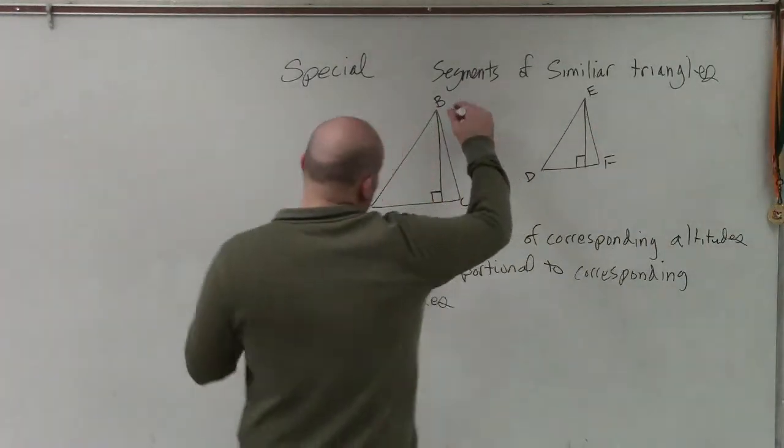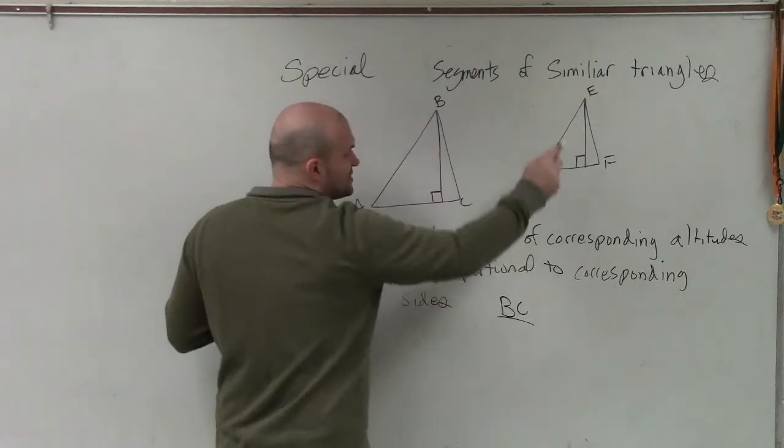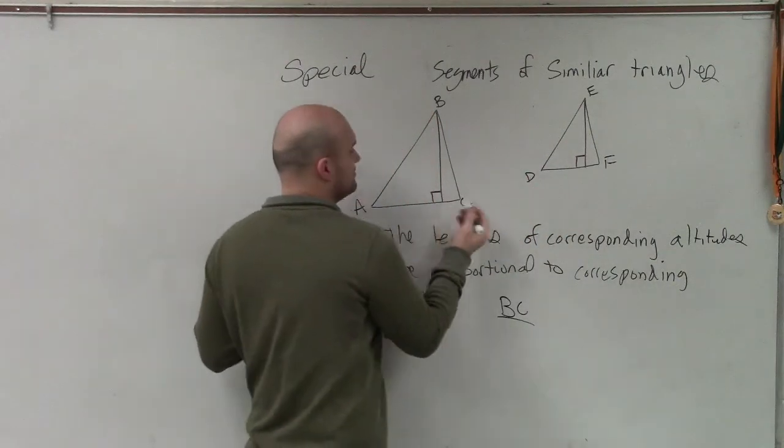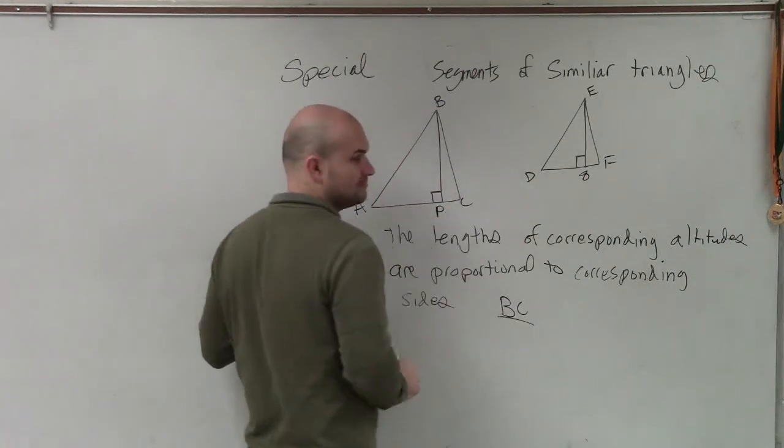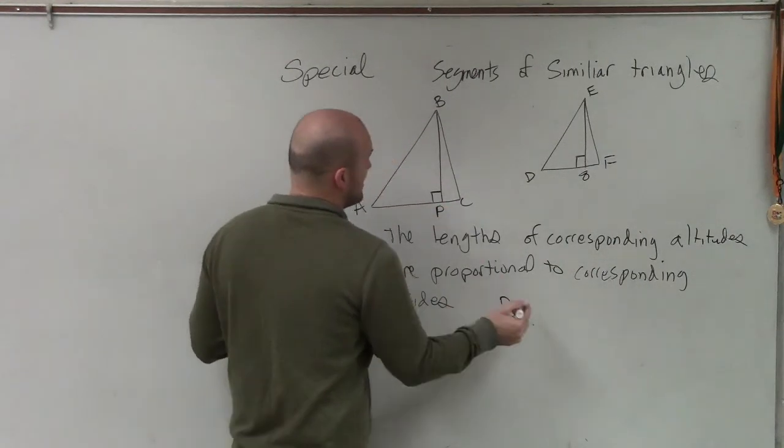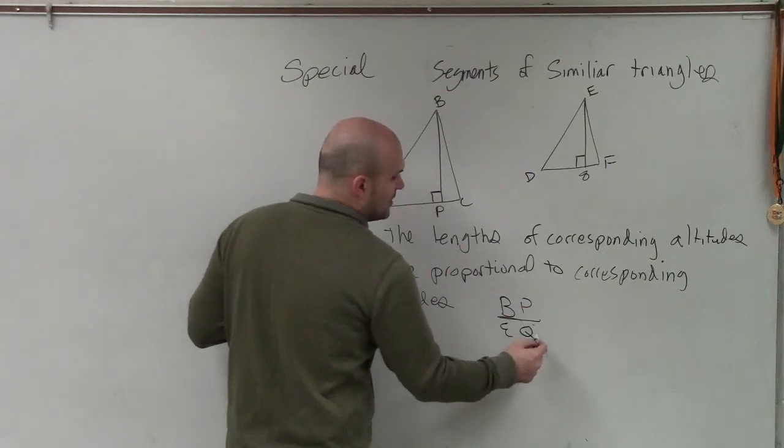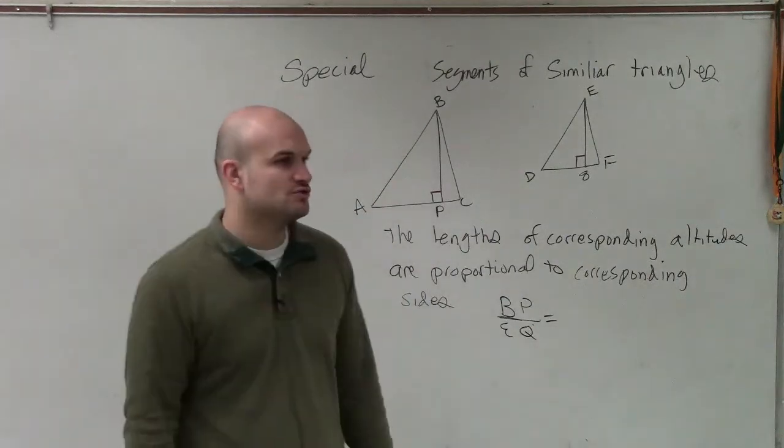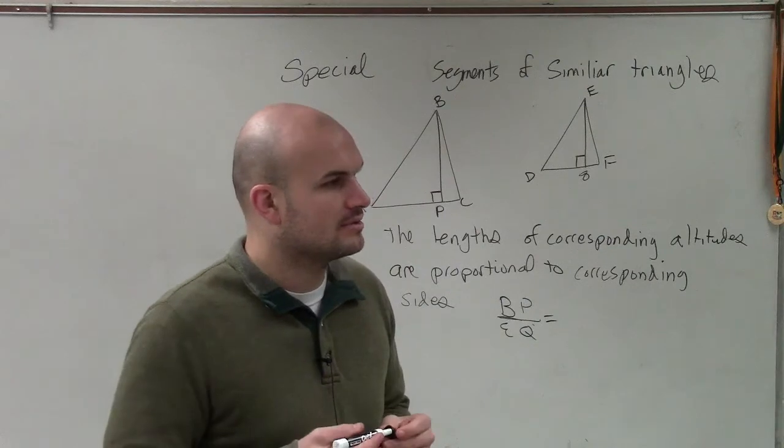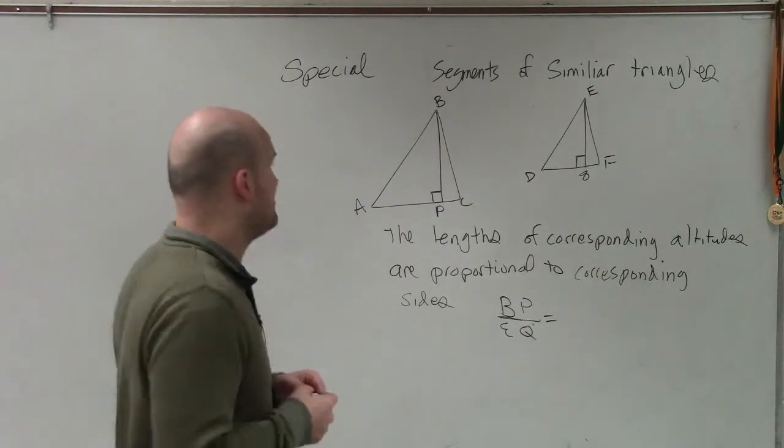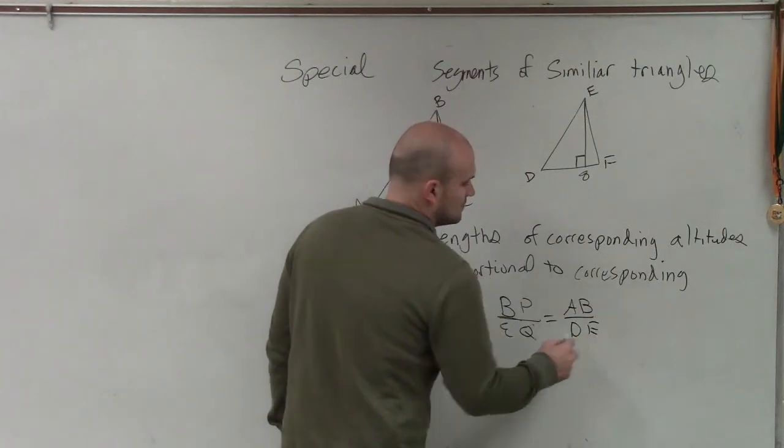Now, we're including the altitude. So now what I can say is BC is to—oh, I forgot to call this. Let's call this P, and let's call that Q, OK? So what I'm saying is BP is a ratio with EQ, and that is equivalent to—Josh, give me two sides that are corresponding on those two similar triangles. A, B, and D, E.